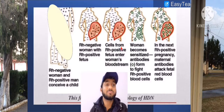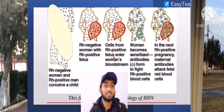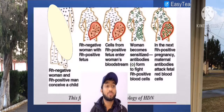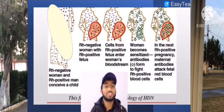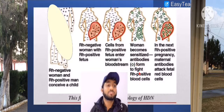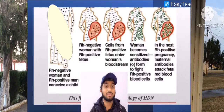The cells from the RH positive fetus enter into the woman's bloodstream. In the next pregnancy, women become sensitized with antibodies to fight RH positive cells. In the next RH positive pregnancy, maternal antibodies attack fetal red blood cells, leading to abortion or an abnormal second pregnancy. This is actually the detailed pathophysiology of HDN.